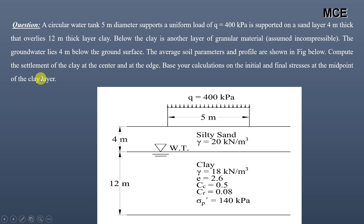From the soil profile, we have silty sand to a depth of 4 meters with unit weight of 20 kN/m³. Then a clay layer 12 meters deep with unit weight 18 kN/m³, void ratio 2.6, compression index Cc = 0.5, recompression index Cr = 0.08, and preconsolidation pressure of 140 kilo Pascal. At the top, a circular footing of diameter 5 meters is loaded with 400 kilo Pascal.